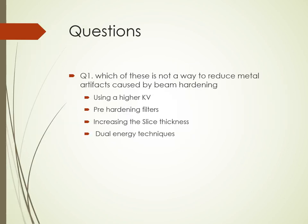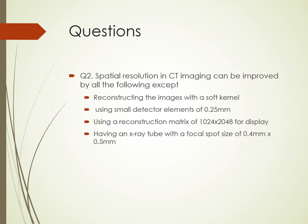First review question: Which of these is not a way to reduce metal artifacts caused by beam hardening? The choices are: using a higher KV, pre-hardening filters, increasing the slice thickness, or dual energy techniques. The correct answer is the third choice — increasing the slice thickness is not a way to reduce metal artifacts caused by beam hardening.